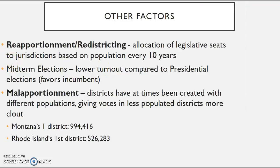Other factors include reapportionment and redistricting. The state legislature has to redraw lines because populations move. Countrywide, you have to reapportion because populations change — for example, a lot more people are moving to the South, particularly Texas. As Texas gets millions more residents, it deserves more representation in the House of Representatives, so you reapportion according to the census every 10 years.